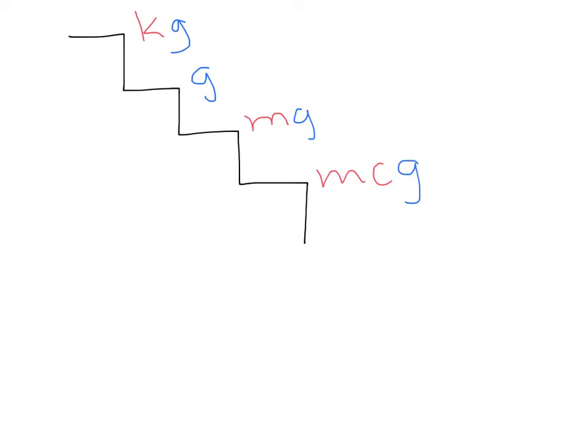How we use the stair step method is this: what we need to remember is that every time we're going down a step, down means to multiply. So every time we go down a step, we are multiplying by 1000 every time you go down one step.